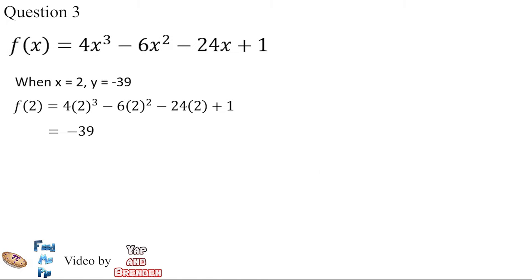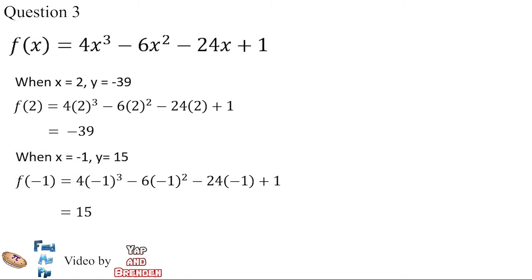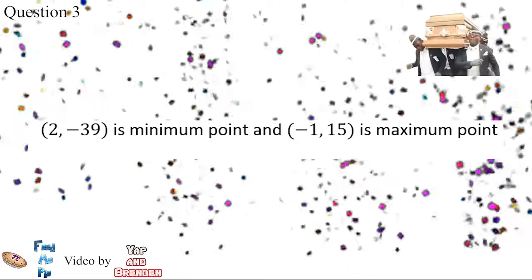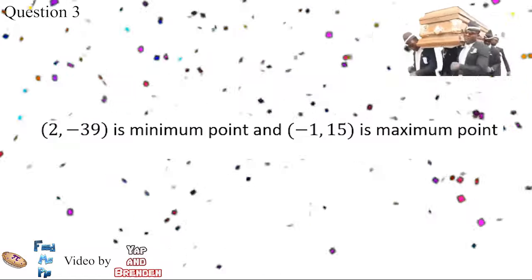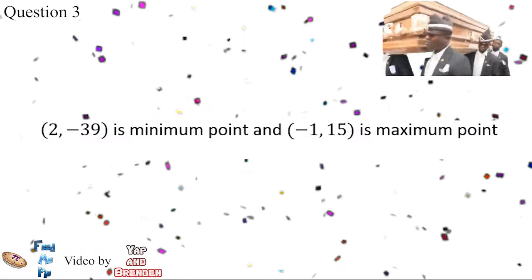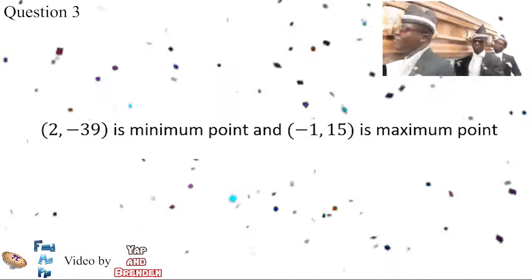Substituting x equals 2 into f(x) to find its y-coordinate, and substituting x equals negative 1 into f(x) to find its y-coordinate. As a conclusion, (2, -39) is a minimum point and (-1, 5) is a maximum point.